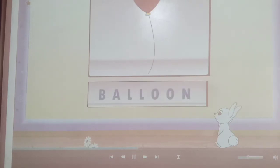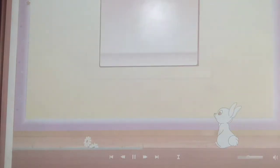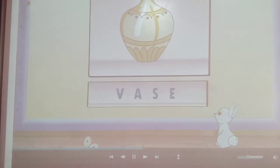Balloon, the consonants are B, L, L, and N. Here is vase. The consonants are V and S. I am sure you enjoyed that Rainbow.